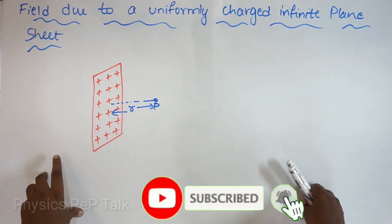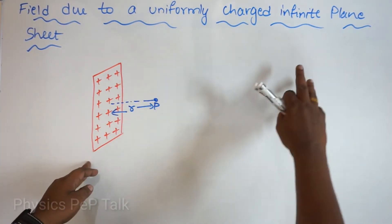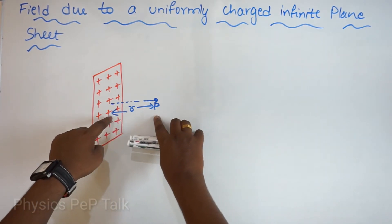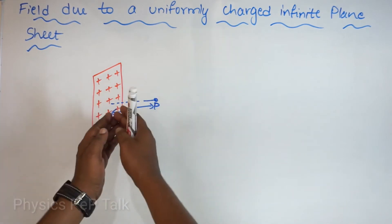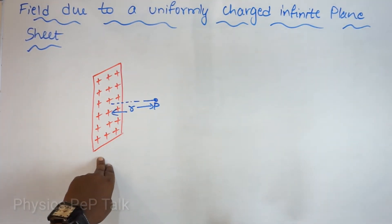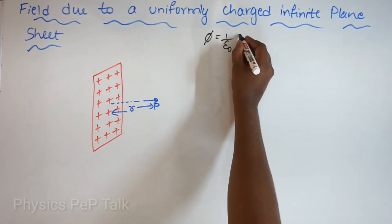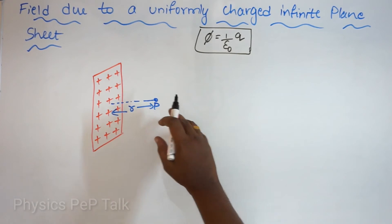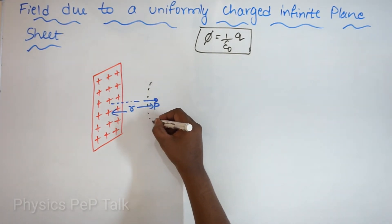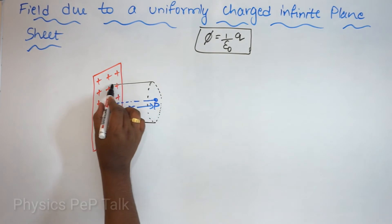The second application is the electric field due to a uniformly charged infinite plane sheet. Consider one metal sheet which is uniformly charged — it is called an infinite plane sheet when the distance between point P and the metal sheet is very small compared to the area of the sheet. We will use Gauss law: the total flux through any closed surface is 1 by epsilon naught times the total charge within that system. I will consider an imaginary cylinder such that point P lies on one of the faces of the cylinder.